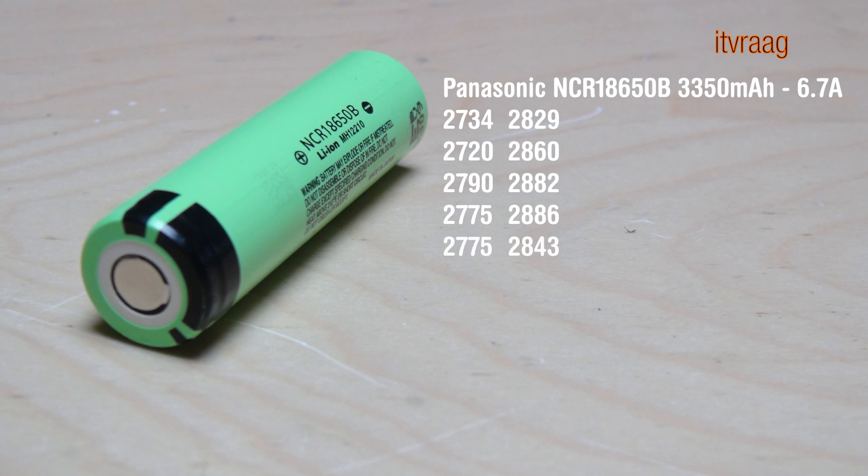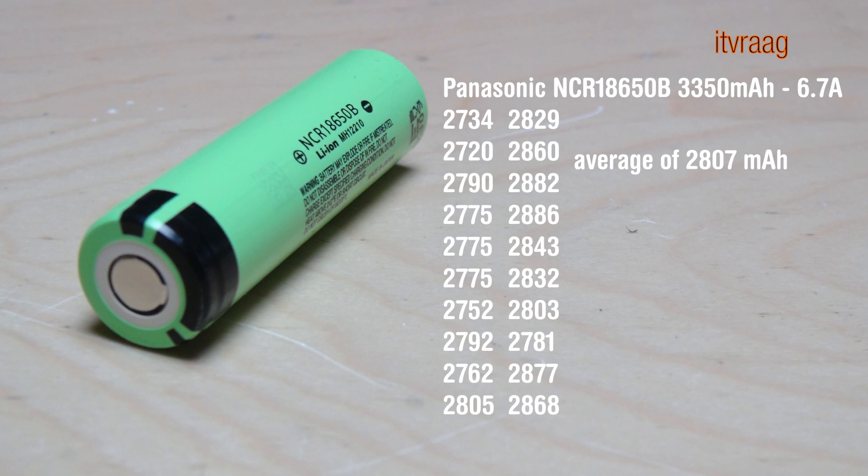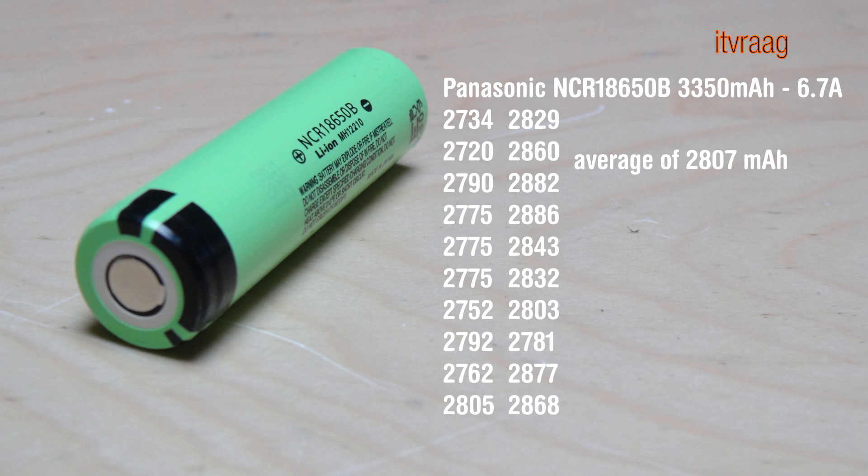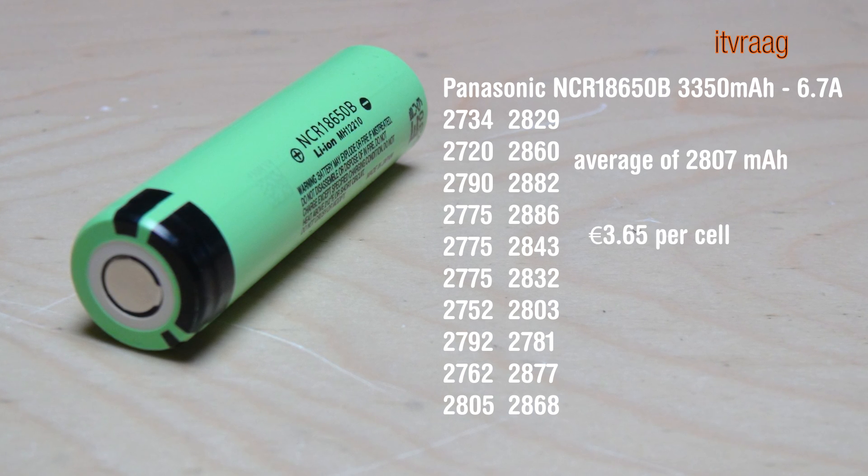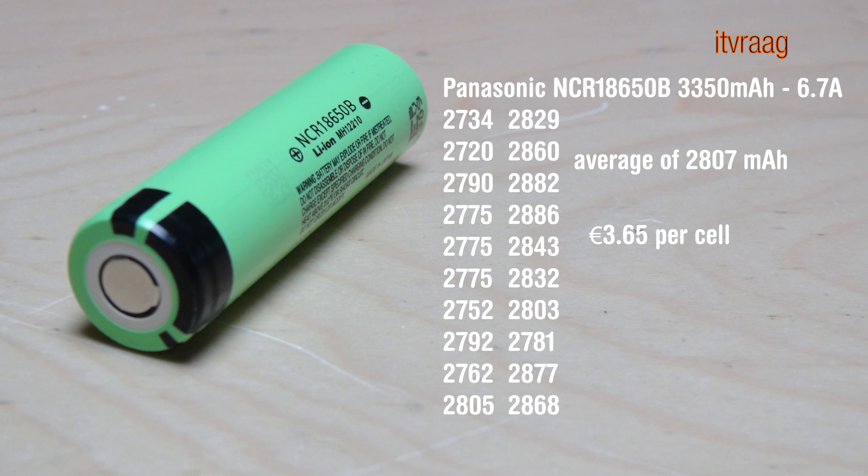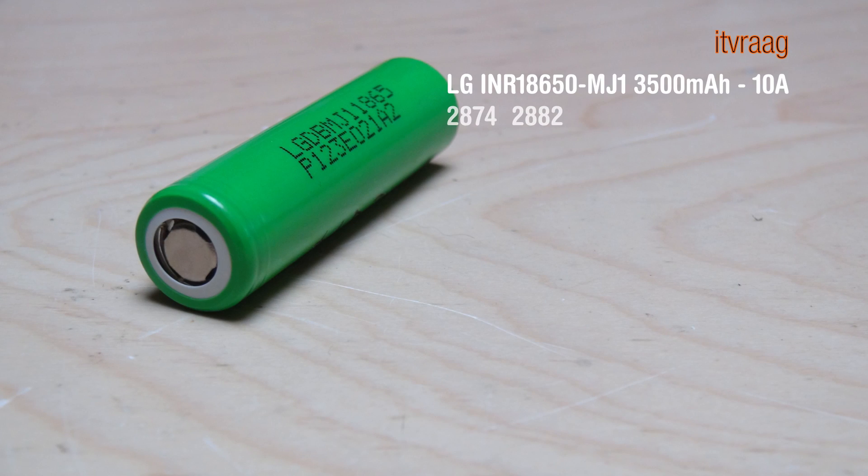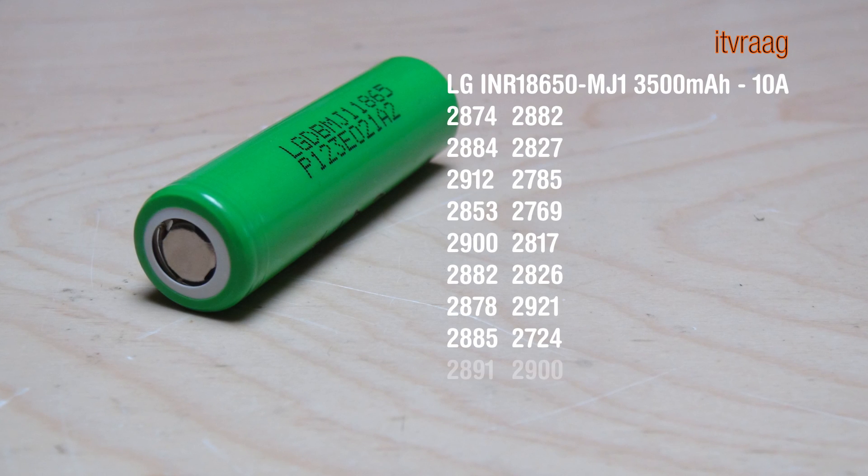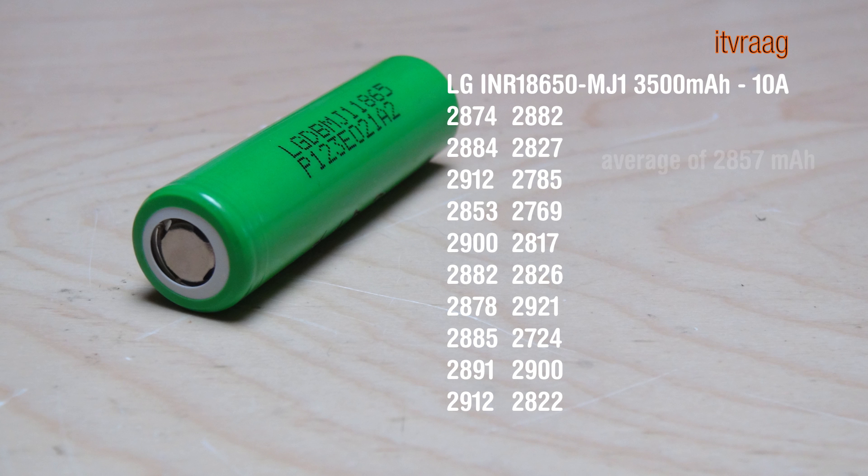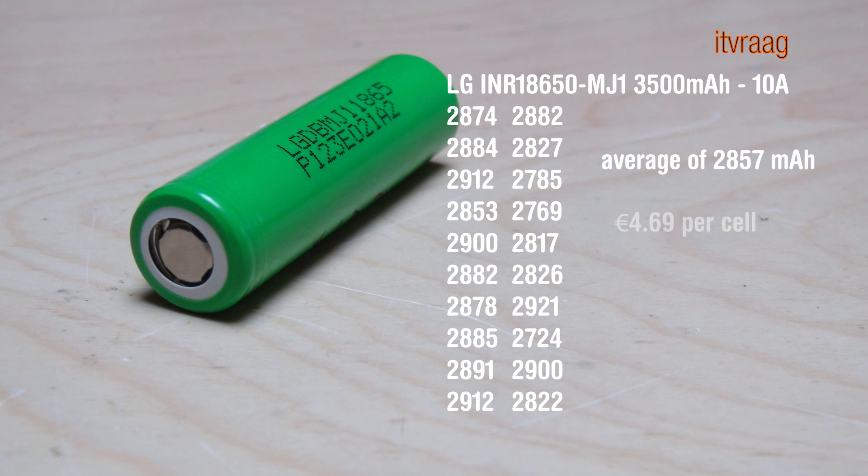The LG had an average capacity of 2887 mAh while costing 3.65 euro per cell. And the LG had an average of 2857 mAh while costing 4.69 per cell.